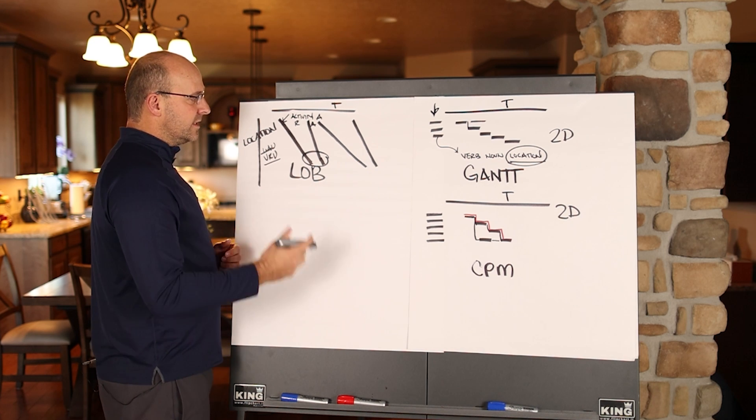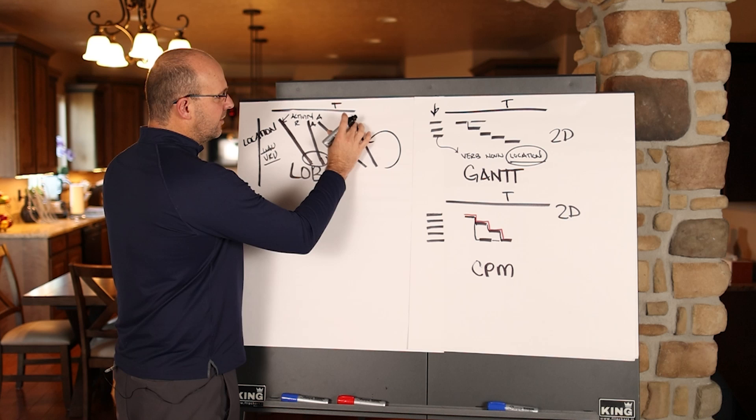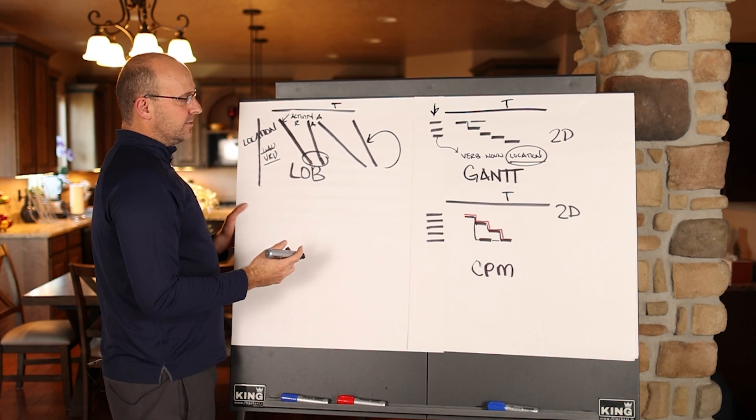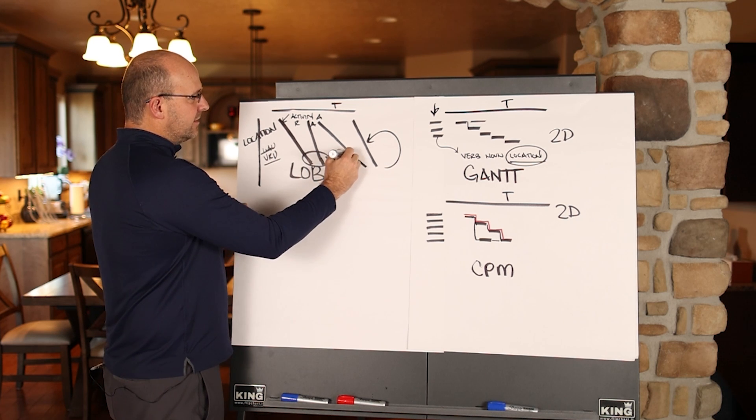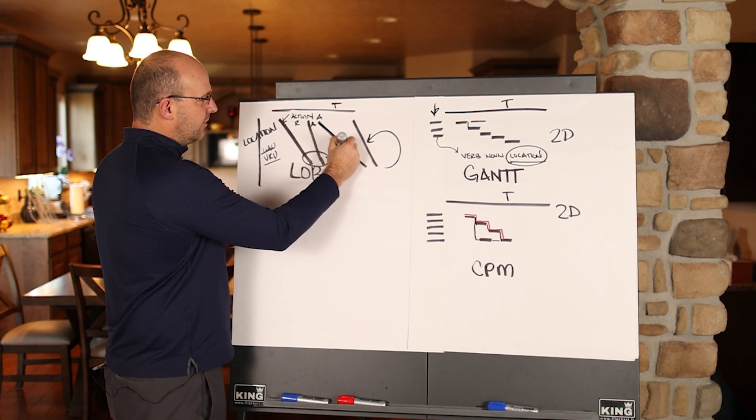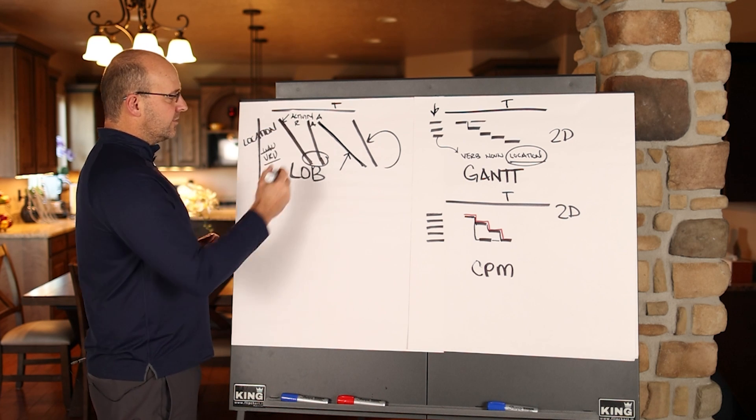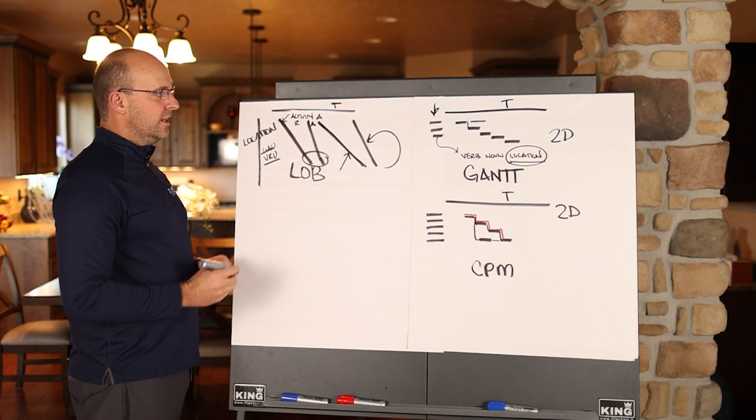And it really helps you to identify the speed, but it doesn't necessarily focus on getting all of these to go the same pace, you certainly can in the scheduling method. But really, the idea is to identify the line of balance or the speed at which that resource or that activity is going in a time by location, or a time by value adding unit or value receiving unit format.